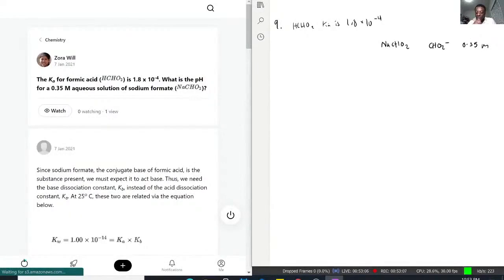So the actual form we'll be working with here is going to be CHO2 minus plus H2O. That's aqueous liquid turns into HCHO2 aqueous plus OH minus.